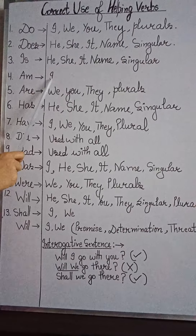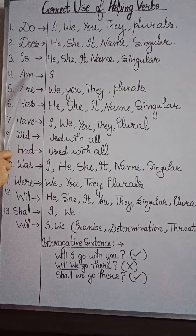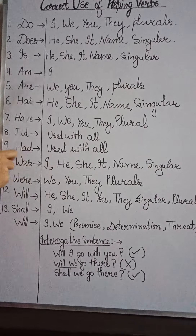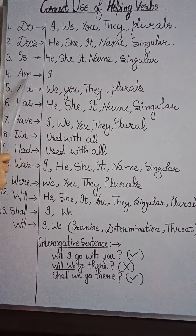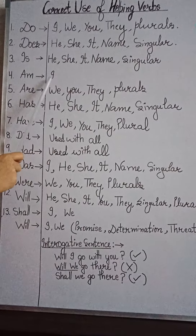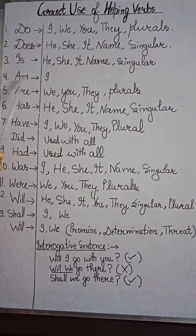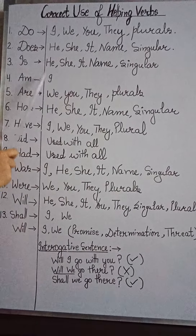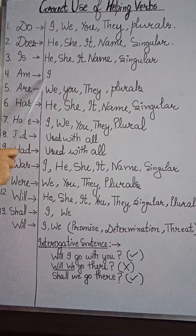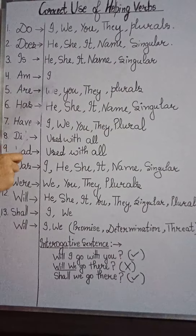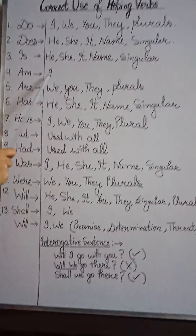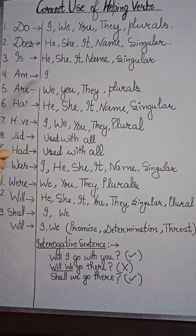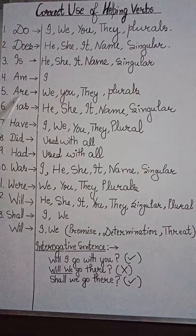'Am' का use जो है, 'I' के साथ हमेशा किया जाता है — किसी और pronoun के साथ नहीं। जैसे कि 'I am going to the market।' 'I' के साथ हमने 'am' use किया। कभी भी हम यह नहीं कहते 'I is going to the market' या 'I are going to the market।' We always say 'I am।'